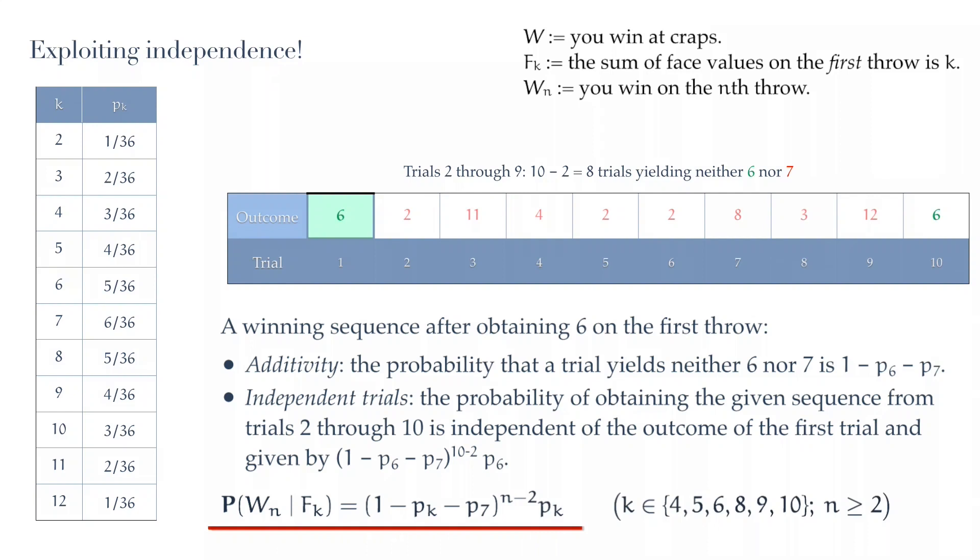The probability of winning on the nth trial, given that K was a sum on the first trial, where K here is 4, 5, 6, 8, 9, or 10, and N is any number bigger than 2, is obtained by multiplying 1 minus Pk minus P7, N minus 2 times, one for each of the intervening trials, and finally multiplying all of that by Pk to return to the original trial and win the game.